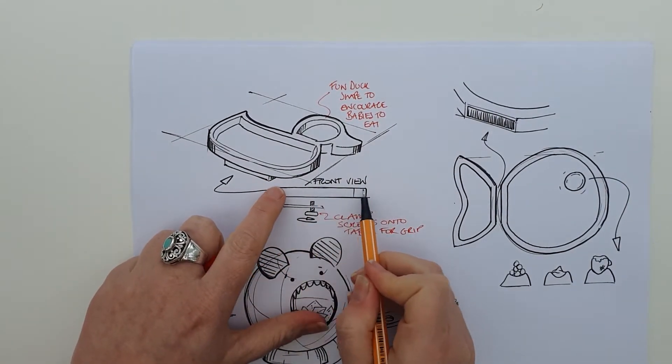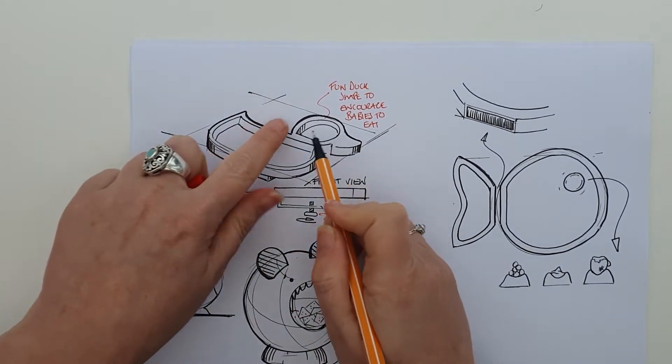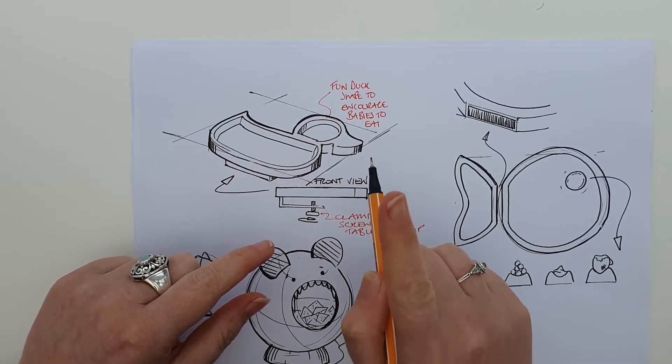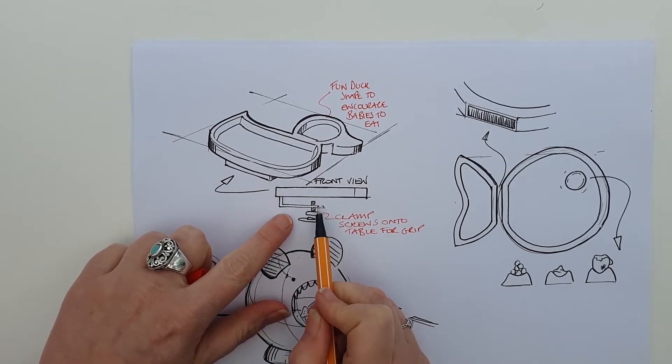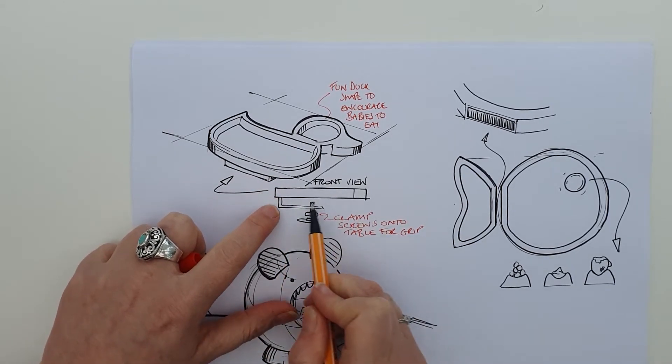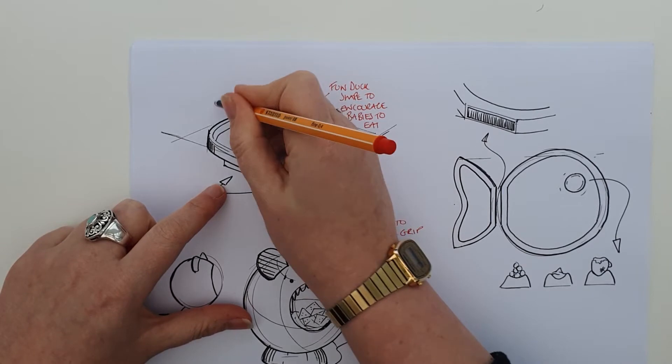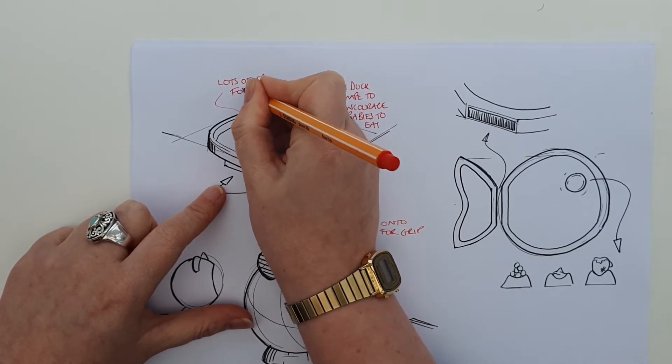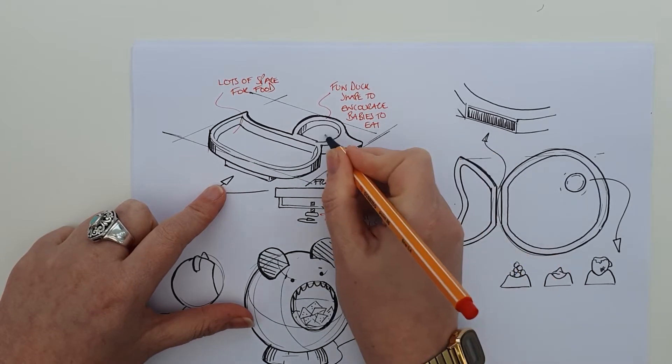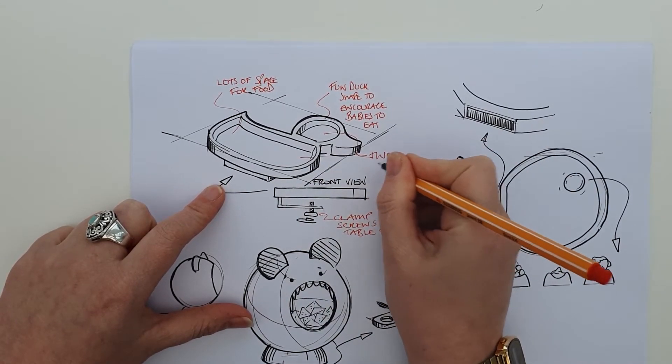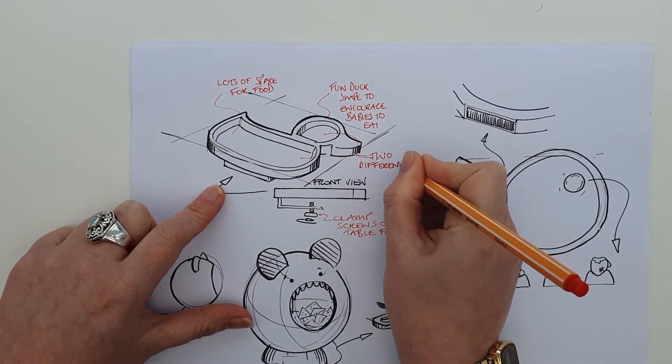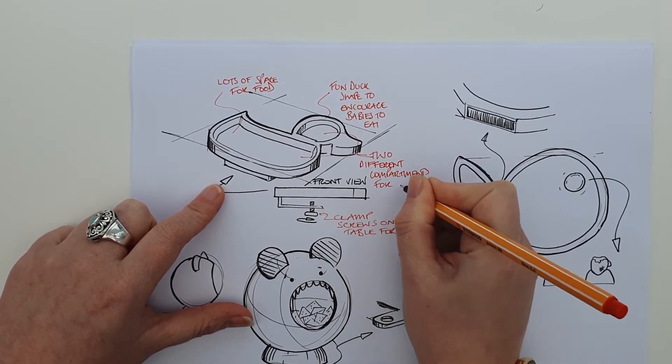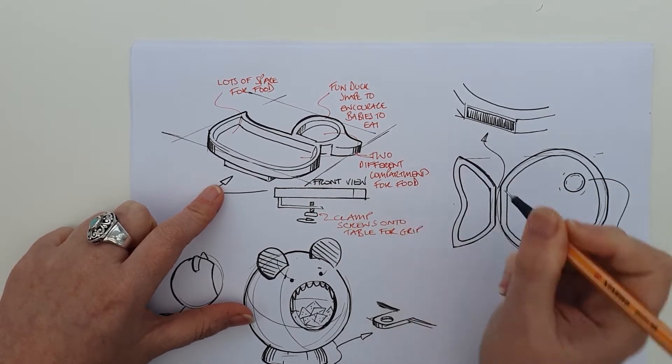Now you'll notice I've got a 2D view here - I've got a front view looking in this way, and I've got a 3D view here. That's really useful to use more than one type of sketch to communicate your idea. I wouldn't have been able to sketch this in my 3D view here, so that's why I've done another view just next to it. So here we've got lots of space for food, and we've got two different compartments for food. Again, that was in the brief.